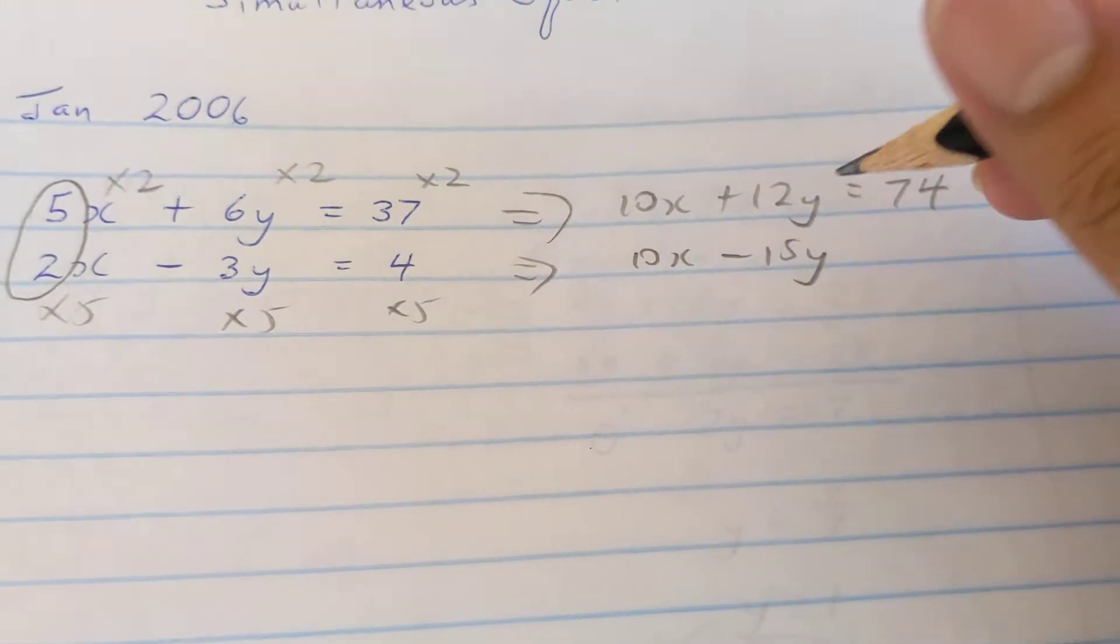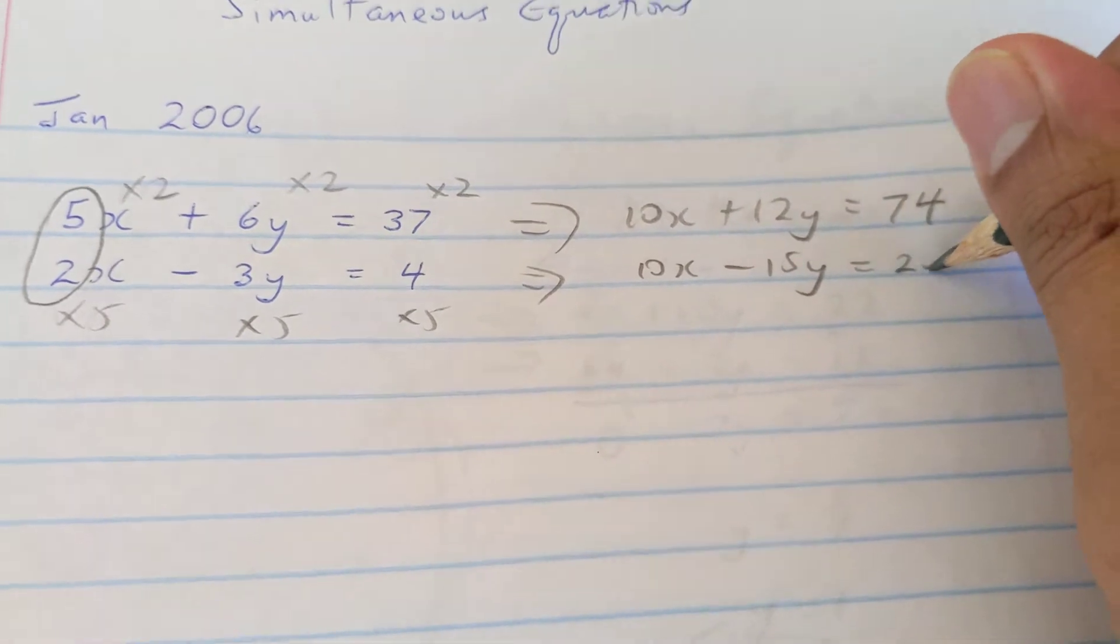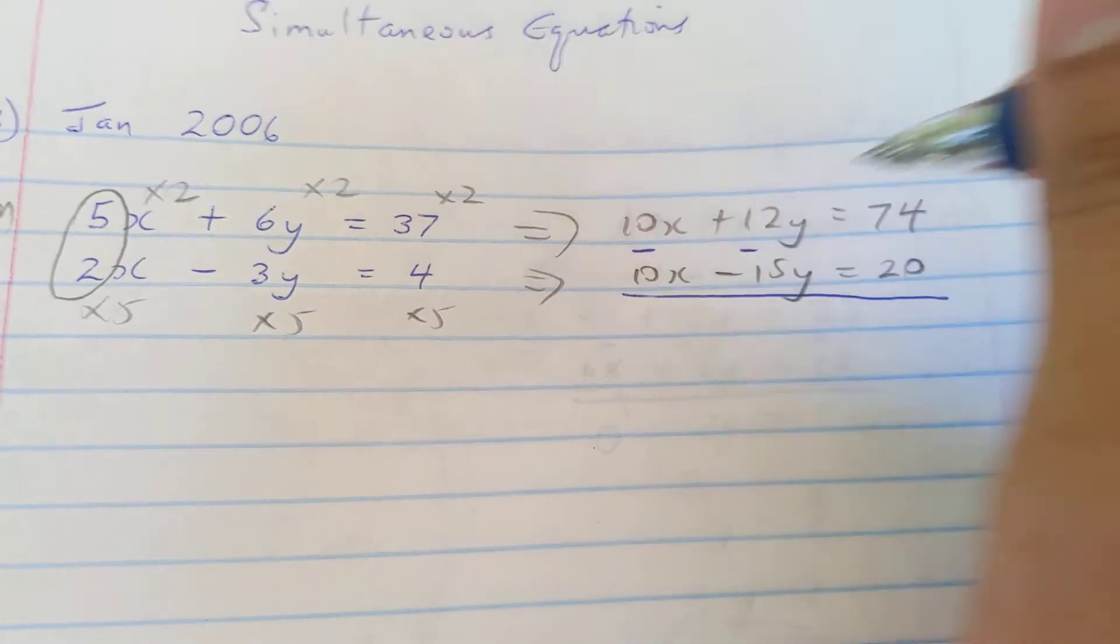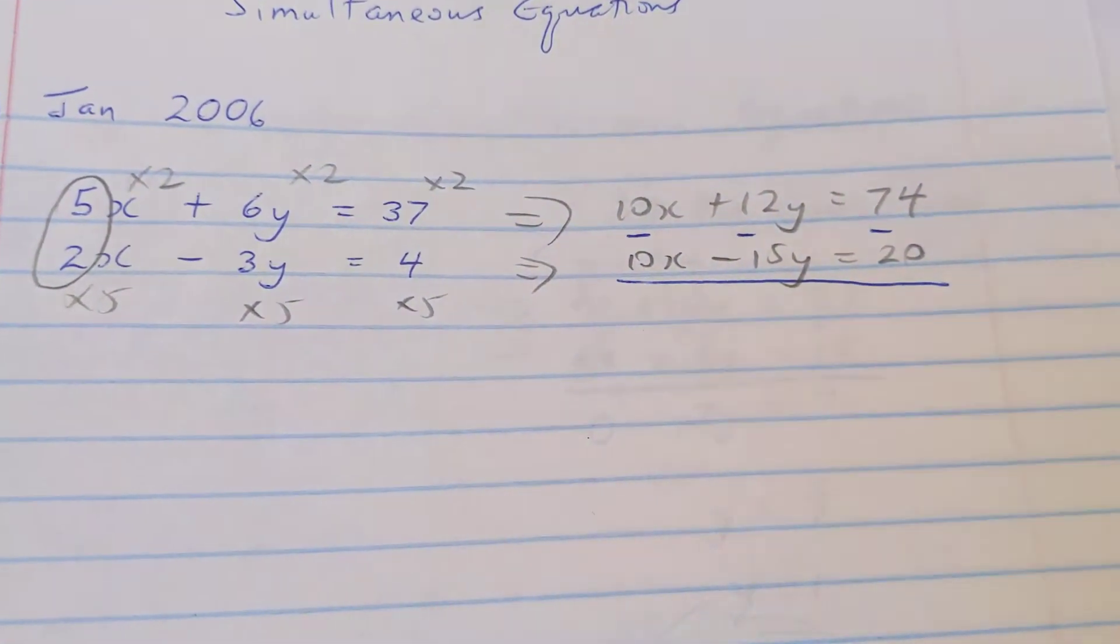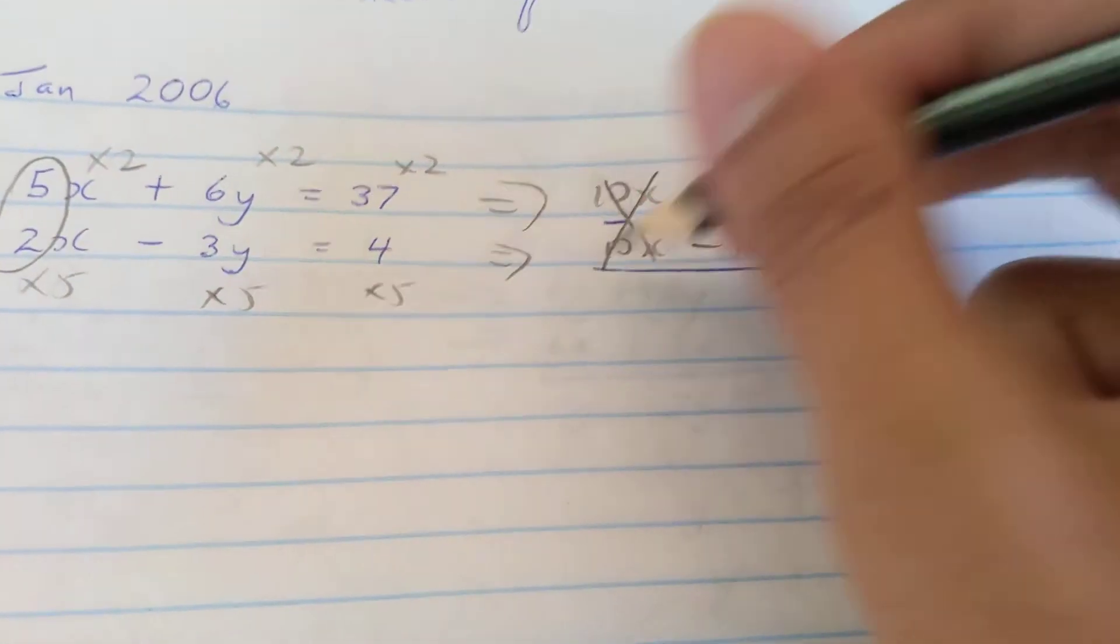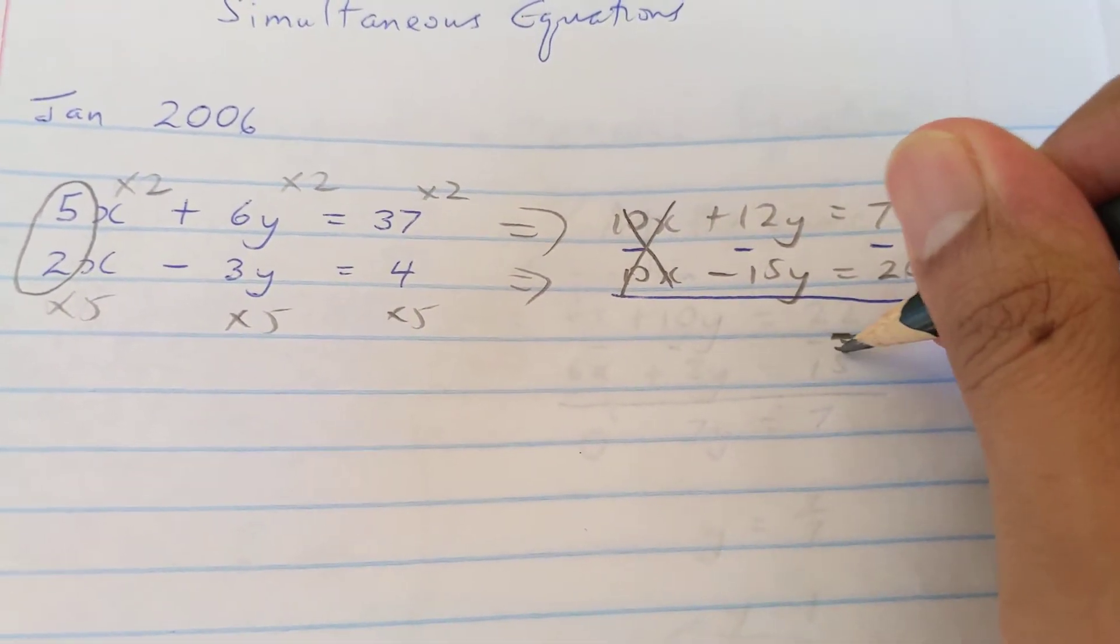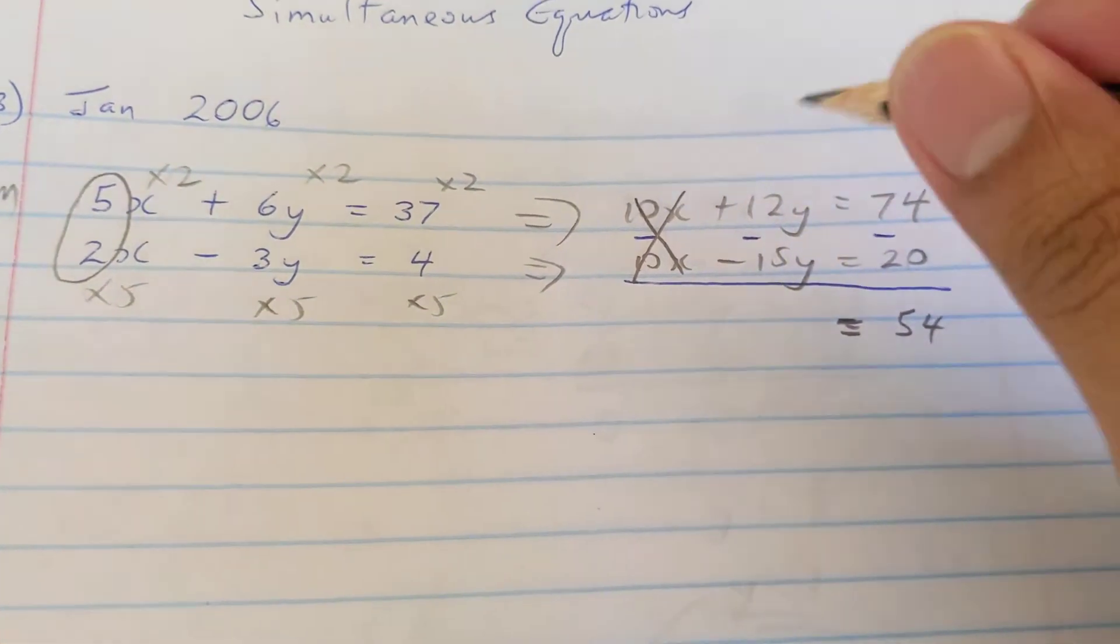Now that both of the terms are the same, I always subtract each piece from the piece on top. 10 take away 10, we still eliminate that. Now 74 take away 20 is going to give us 54.